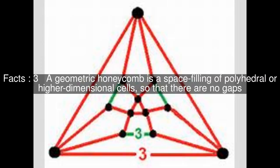A geometric honeycomb is a space-filling of polyhedral or higher-dimensional cells, so that there are no gaps. It is an example of the more general mathematical tiling or tessellation in any number of dimensions.